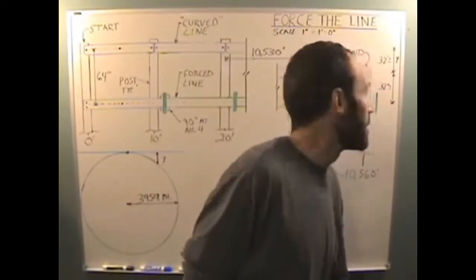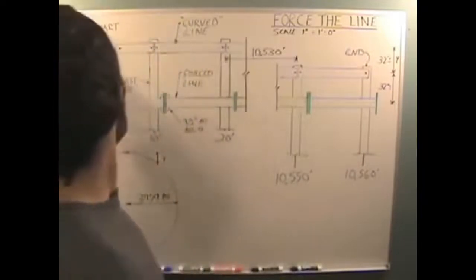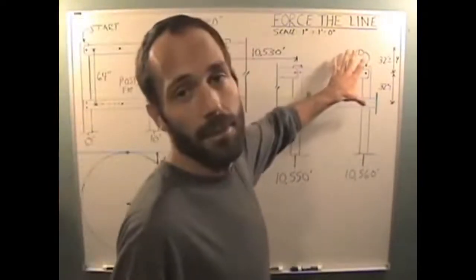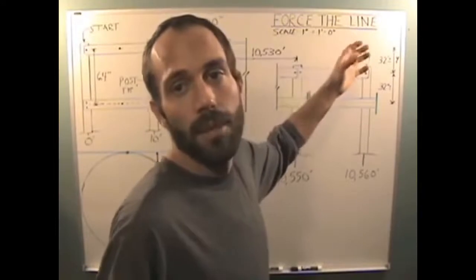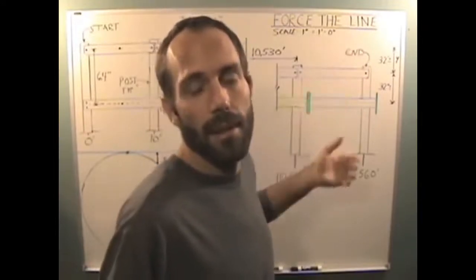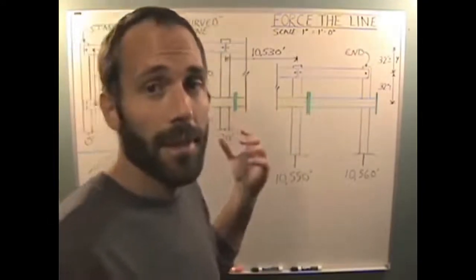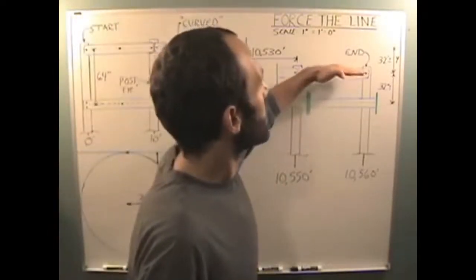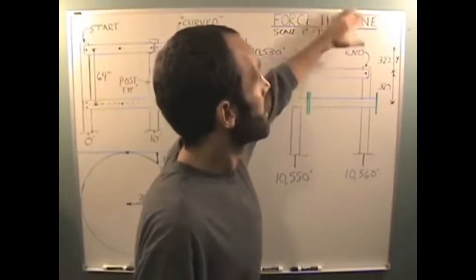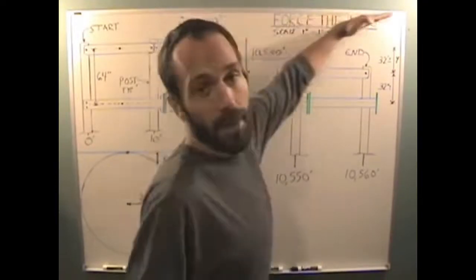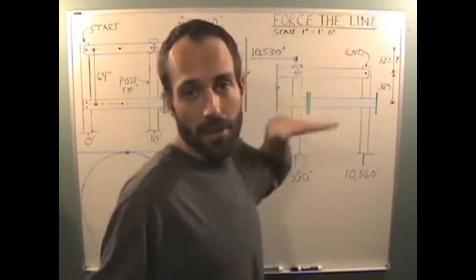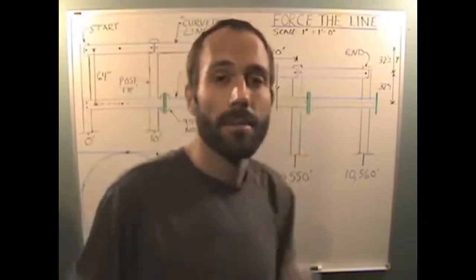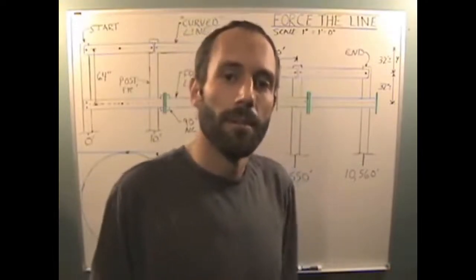now if the earth is actually flat then starting at 64 inches here you would end with 64 inches here there would be no drop it would stay the same if the earth is concave then you would actually end up with 64 inches plus 32 inches the blue line would be up here somewhere because it would show a curve up very simple let's do it